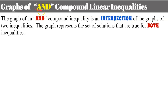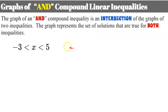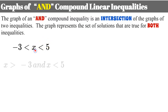Graphs of AND compound inequalities are an intersection of the graphs of the two inequalities. The graph represents the set of solutions that are true for both inequalities — think about the overlap, and that is your solution set. So I have a simple compound inequality: x is greater than negative 3 and x is less than 5. Remember, when you reverse where the variable is and flip it to the other side, you must also flip the inequality symbol. When there are no words and it's written in combined form, we know the word is AND.